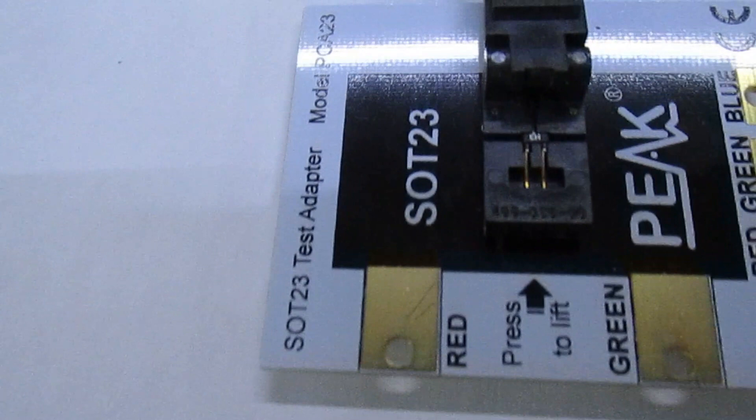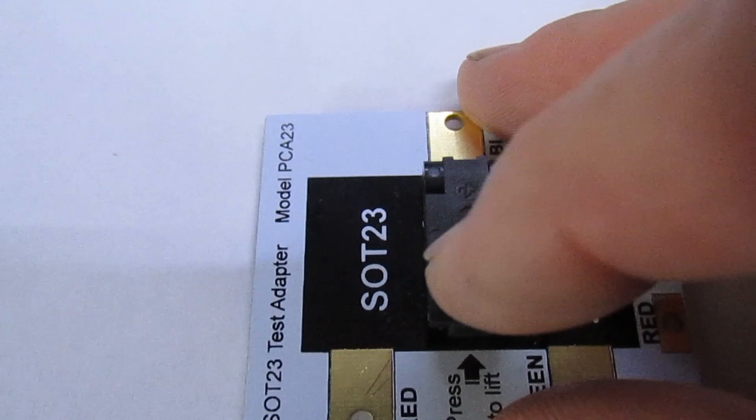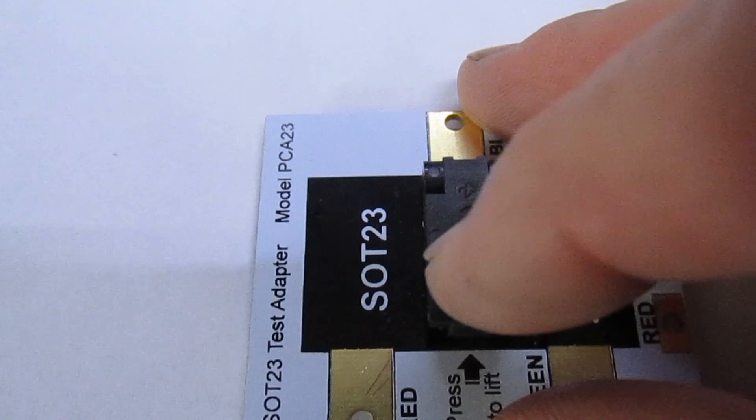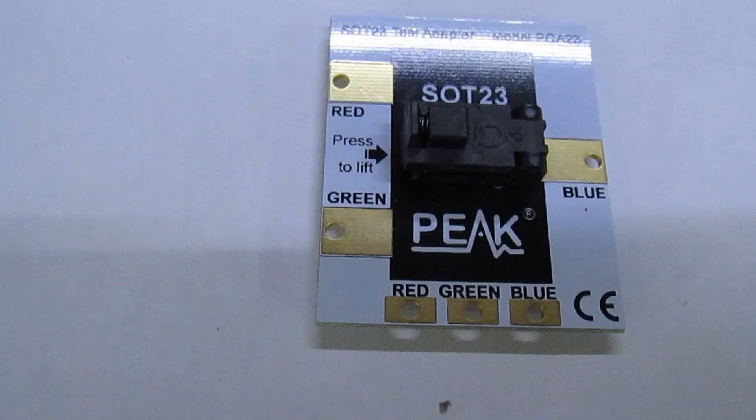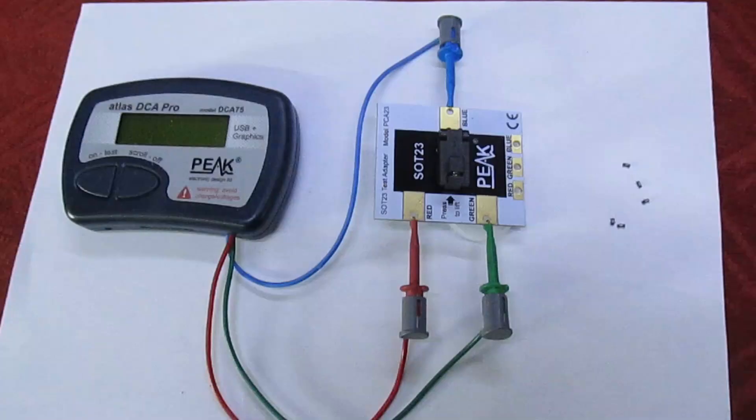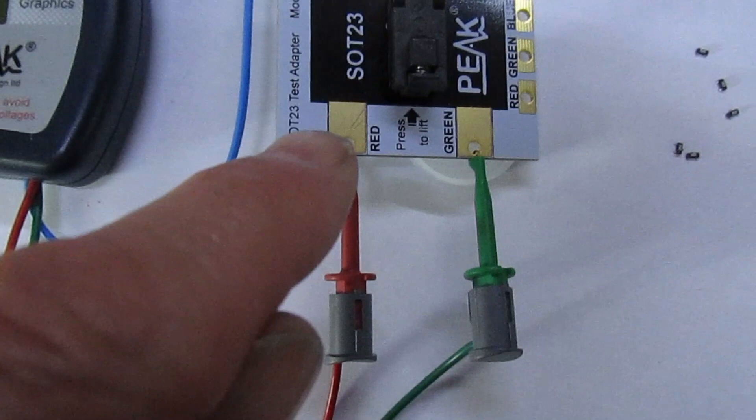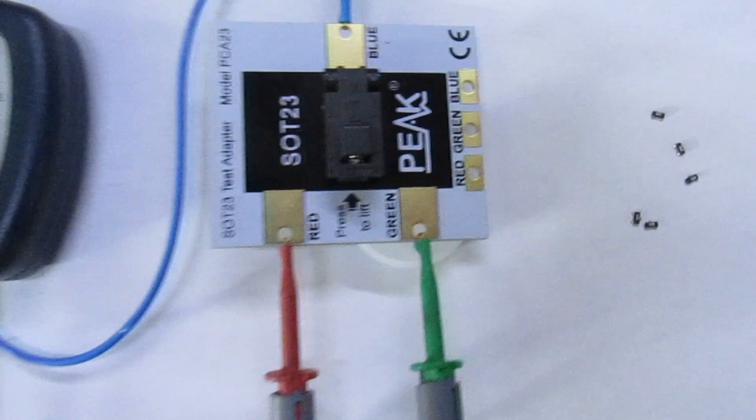And connect your peak tester to it. Right, so there we go, the transistor's in and I've connected the leads as it says - red, green, blue. You can see the outline of that actually matches what the transistor looks like, or you can use the terminals at the bottom, it doesn't matter. And let's press the button and the peak tester...